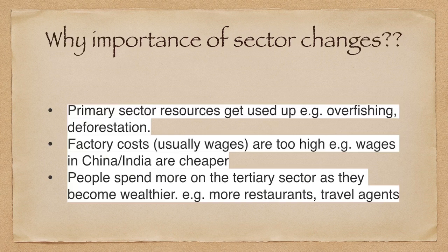Why does the importance of a sector change? First, the primary sector's resources get used up. Examples are overfishing or deforestation. The factory costs, usually wages, are too high.